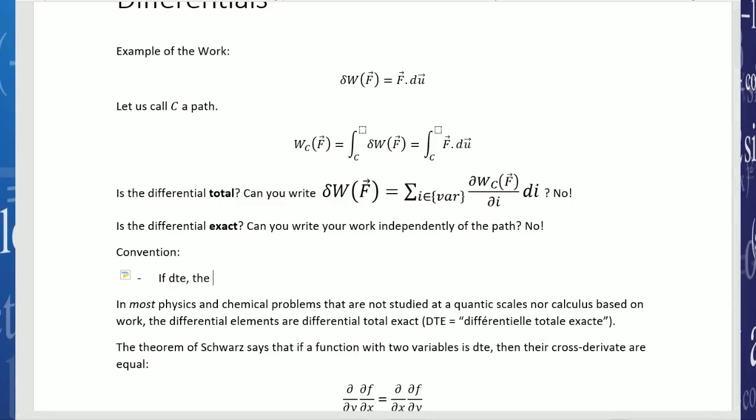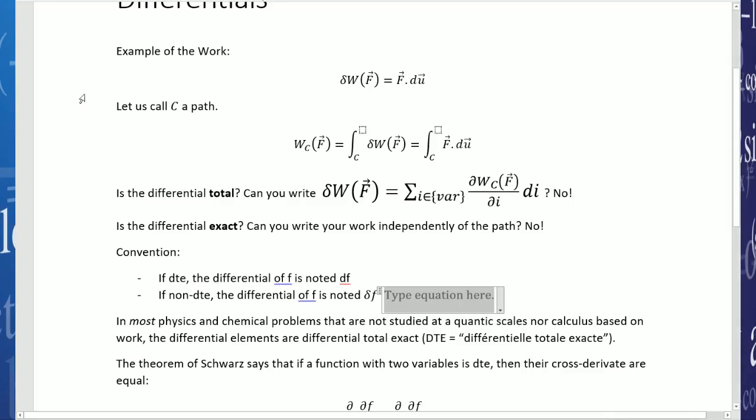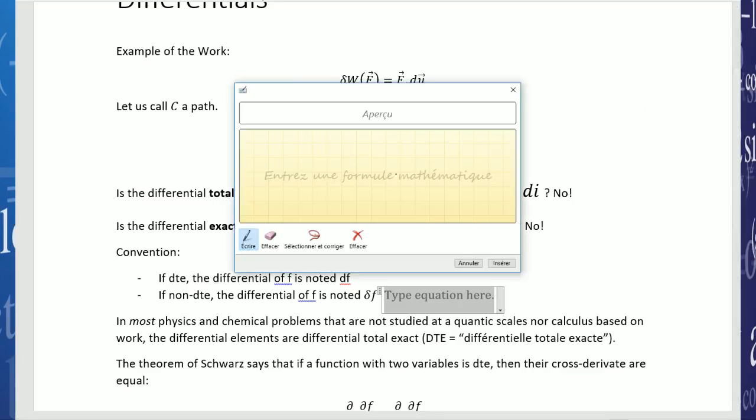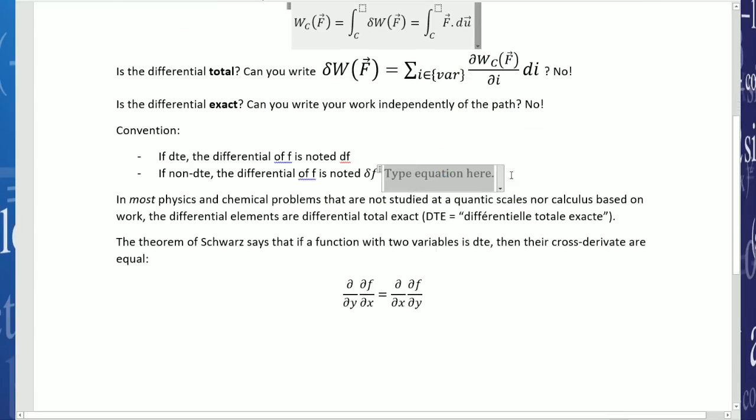Convention: If DTE, the differential of F is noted dF. If non-DTE, the differential of F is noted delta F, or there is another notation that I like to use, it's a D with a bar. So it's an old notation.